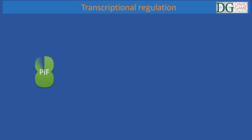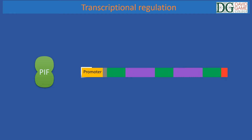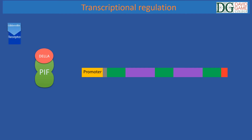The phytochrome interacting factor, PIF, is a transcription factor that acts in the seeds of cereal plants. The binding of PIF to a promoter is inhibited by Della proteins. In turn, Della proteins are controlled by a plant hormone called gibberellin. This hormone, by binding to a specific receptor, activates an enzyme that breaks down Della proteins.